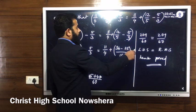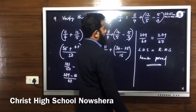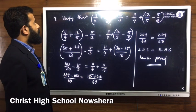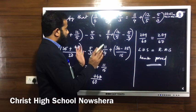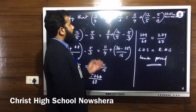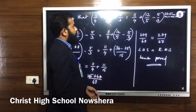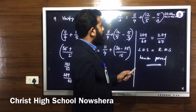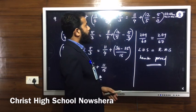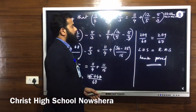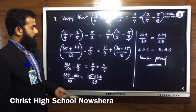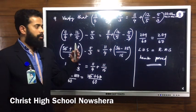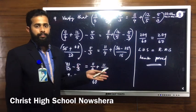So LHS equals RHS = 209 by 60. We have verified that (11 by 4 plus 12 by 5) minus 5 by 3 equals 11 by 4 plus (12 by 5 minus 5 by 3). In all questions, we have done only one part; the remaining parts you can try by yourself. Thank you.